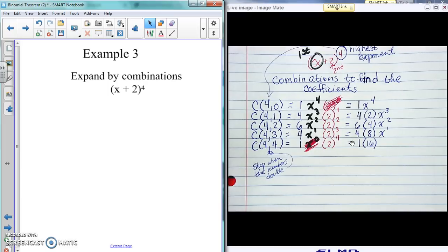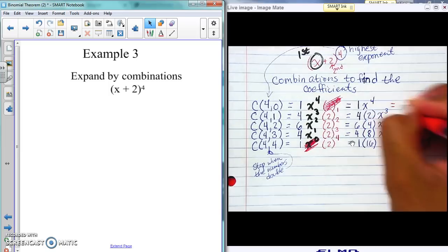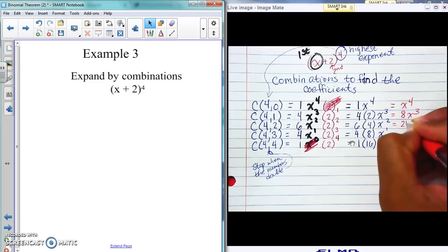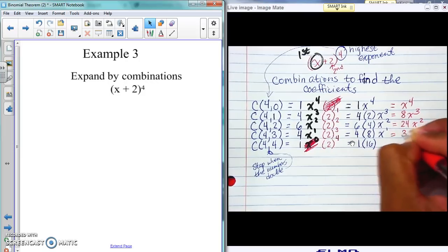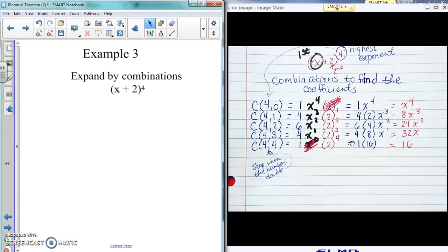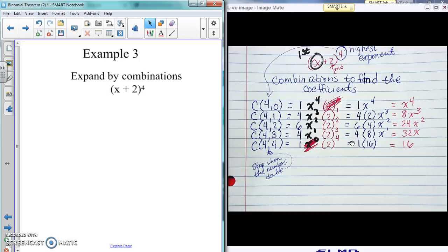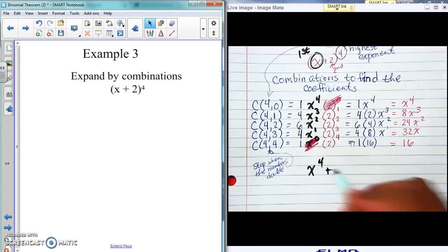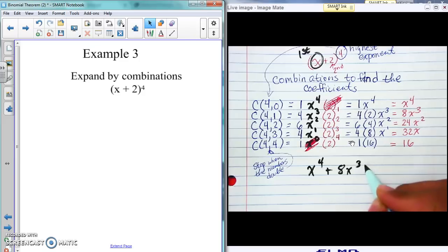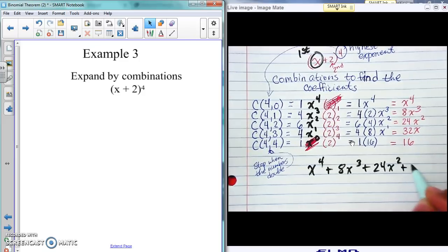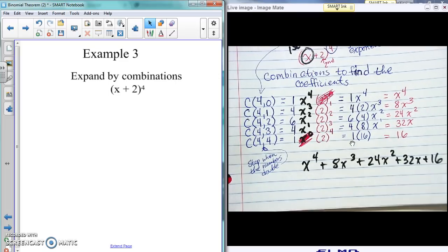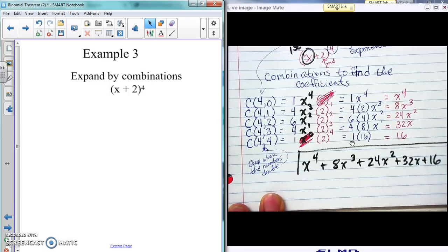And so the last thing is just multiplying the numbers together. And so we get x to the fourth, we get 8x cubed, 24x squared, 32x, and 16. And the very last thing I'm going to do is just write this out. We're dealing with addition signs. So here we're going to do x to the fourth plus 8x cubed plus 24x squared plus 32x plus 16. And that's our final answer there. That's all we have to do, and we are done.